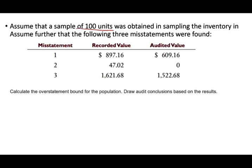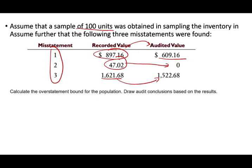Now, assume that a sample of 100 units was obtained, and assume that the following three misstatements were found. We selected 100 rather than the suggested 77 — it doesn't matter, we selected more than what the sample suggested. We found three misstatements. The first: inventory recorded value of $897.16, audited value $609.16. The second: $47.20 of inventory with an audited value of $0 — it doesn't exist, or is obsolete. The third: recorded value $1,621.68, audited value $1,521.68.